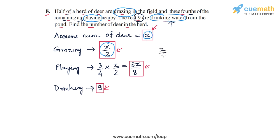So we have the number of grazing deer plus the number of playing deer (3x by 8) plus the number of drinking deer (9). This equals x. We have obtained an equation in the unknown x, and now we can solve it to find the value of x.